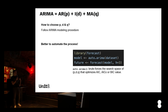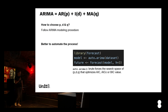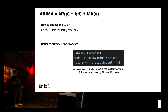ARIMA can be decomposed into an autoregressive part of order p, an integrated part of order d, and a moving average of order q. The question is: how do we choose the p, d, and q values? The classical method is to follow the ARIMA modeling procedure, but we can automate this using the forecast library, which implements an auto-ARIMA method. Auto-ARIMA brute forces the search space of all these parameters to find the combination of p, d, and q values that optimizes on your dataset given some information criteria metric.